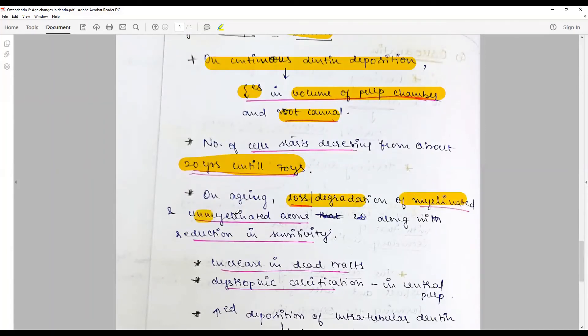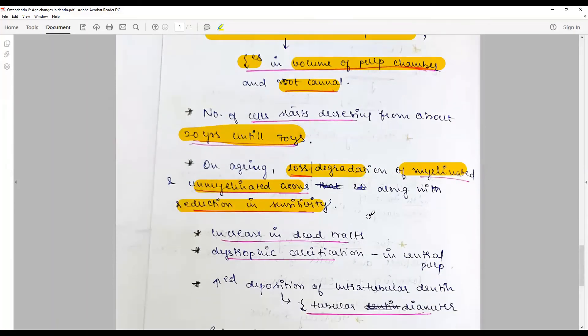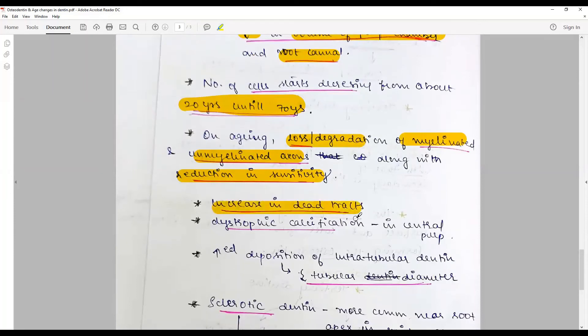Along with reduction of sensitivity in the plexus of Rexis, there is an increase in dead tracts because the tooth is continuously being exposed to noxious stimuli. There is dystrophic calcification or nidus of calcification in central pulp leading to denticles.